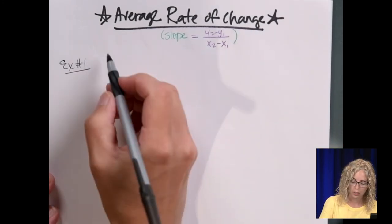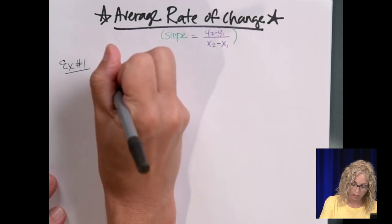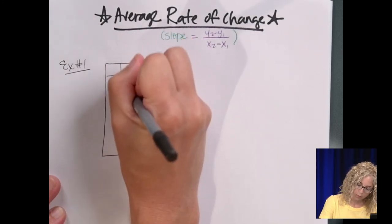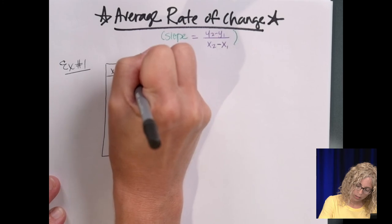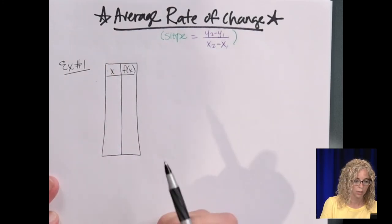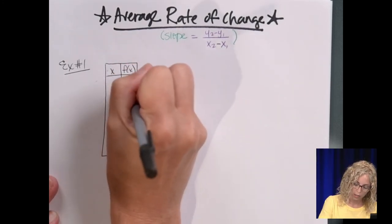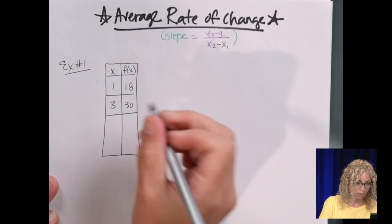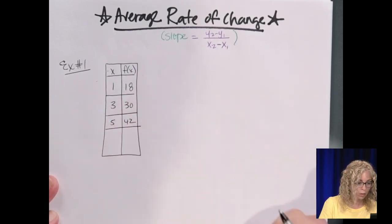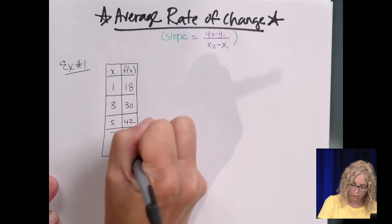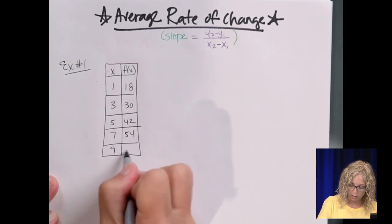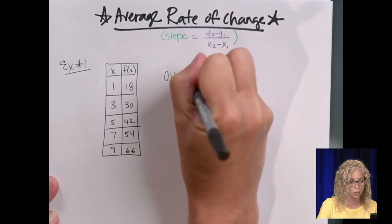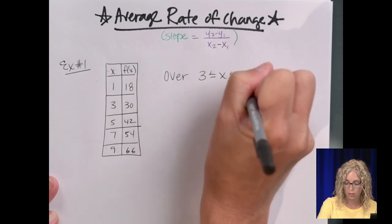So you can be told the two points, in this case our points are on a table. So at the top, we've got x and f of x. And remember f of x is just y, so this is x, y. Our points are 1, 18; 3, 30; 5, 42; 7, 54; and 9, 66. So we need to find the rate of change over the interval 3 less than or equal to x, less than or equal to 9.